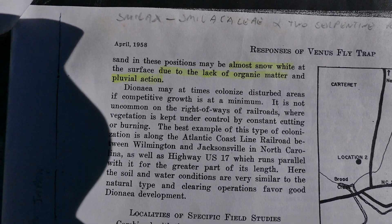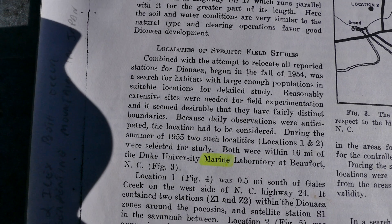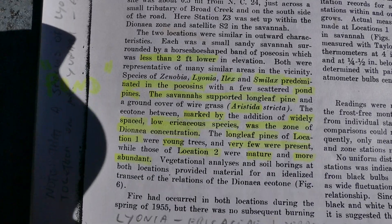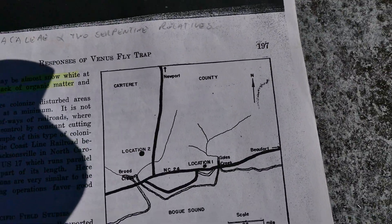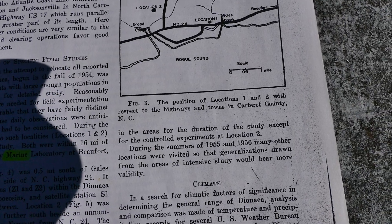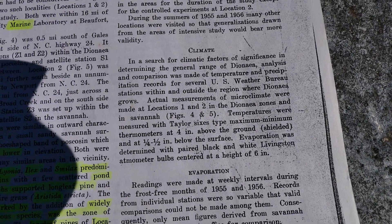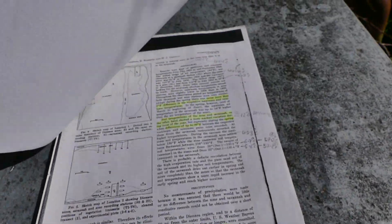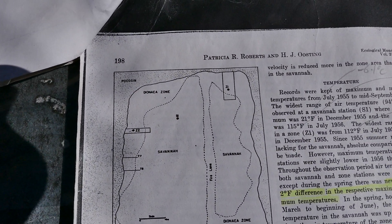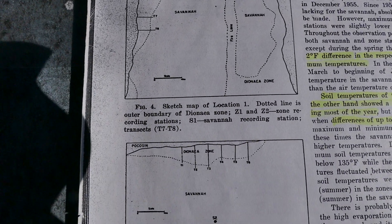Maybe this is a better way — you can look up papers online, you can find it. It's an old paper — they started work on it, I think, in 1953, and it was published in 1958. Robertson, Oostings — according to Donald Snow, he just used to call them Oostings and Oostings, implying that they got married.